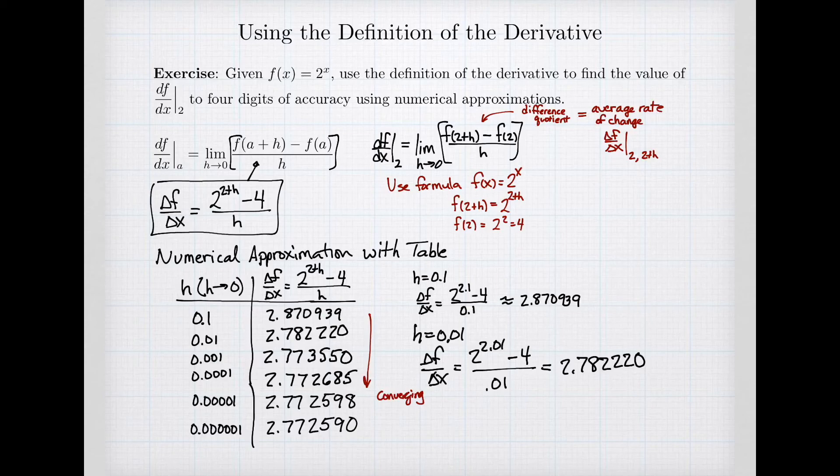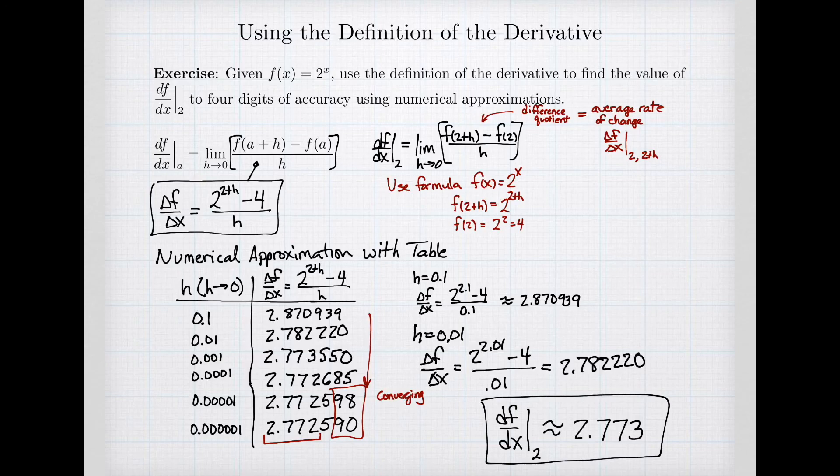So as I've added some more values into my table, I can see now that although the last two digits are still changing, I do have enough accuracy to give four digits of accuracy in my approximation. And so I can reach the conclusion now that my derivative at the point x equals 2 is approximated by 2.773, rounding up at that point. So this is how I numerically approximated derivative using a table.